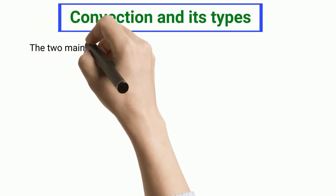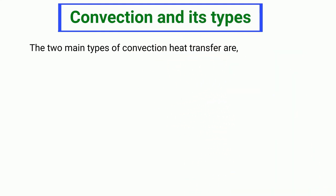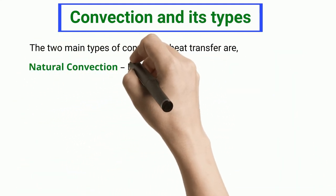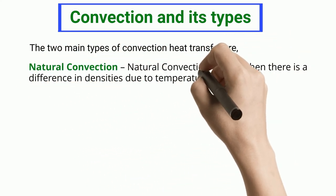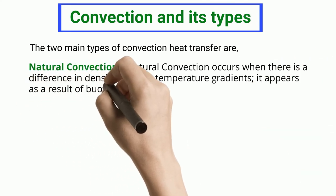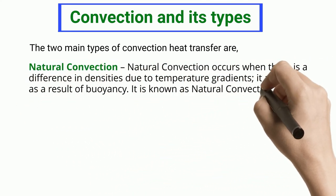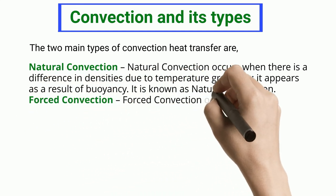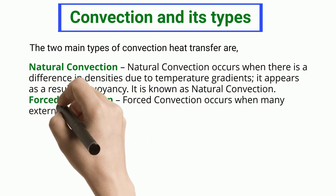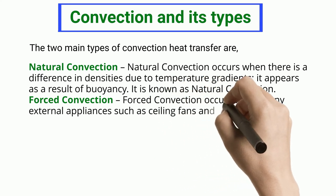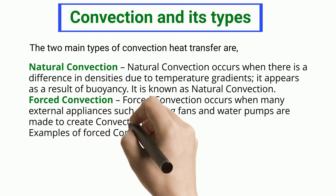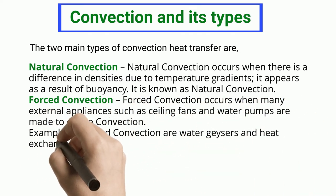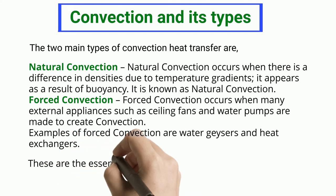Convection and its types. The two main types of convection heat transfer are: Natural convection, which occurs when there is a difference in densities due to temperature gradients and appears as a result of buoyancy; and Forced convection, which occurs when external appliances such as ceiling fans and water pumps are made to create convection. Examples of forced convection are water geysers and heat exchangers.